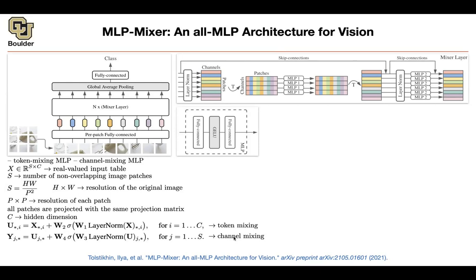You do token mixing and then channel mixing. Token mixing means doing the same operation for every single channel — you fix a channel and do the same operations on each column, then choose another channel and repeat, etc. It is equivalent to transposing: one operates on columns for token mixing, the other on rows. There is one layer normalization, one matrix-vector multiplication, a non-linearity, another matrix multiplication, and then adding the residual connection. The entire figure is just this line of math: take the outcome, layer-norm it, multiply by a matrix, apply a non-linearity, then add the residual connection.